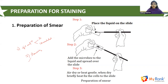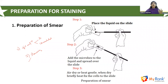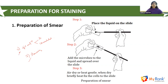Let's talk about the preparation of smear in detail. Take a liquid or solid culture, place it on the slide, add the microbes to the liquid, and spread it over the slide. Allow it to air dry or heat fix gently. The importance of fixation of smear is that it kills the organisms, adheres them to the slide, and alters them so they can readily accept the stains. Smear can be made from liquid or solid cultures or from a clinical specimen.